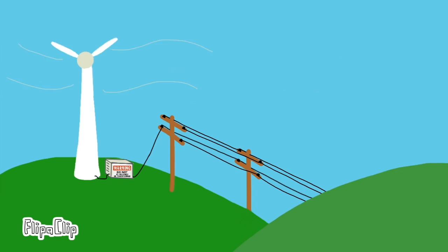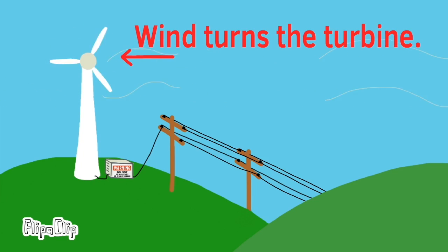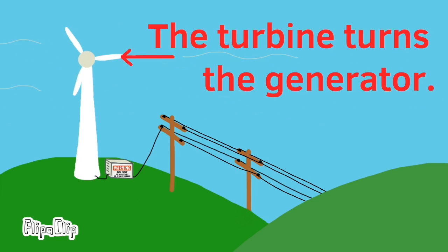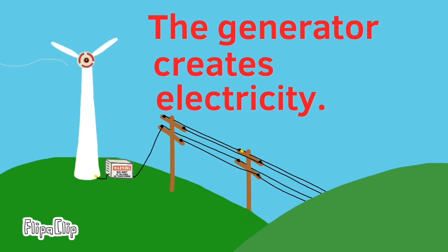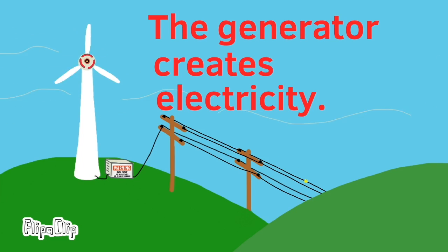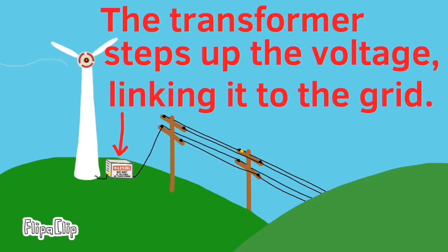Wind Energy. Wind turns the turbine. The turbine turns the generator. The generator creates electricity. The transformer steps up the voltage, linking it to the grid.